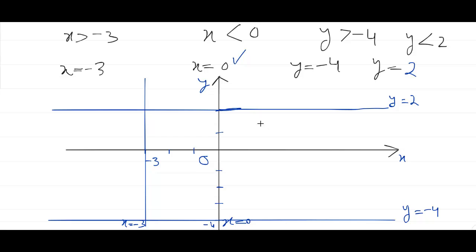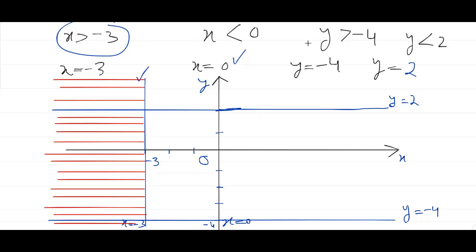Now let's shade the unwanted region. Take the first inequality: x is greater than minus 3, where this line is x equals minus 3. The required region is on the right-hand side, but we will shade the unwanted region, which is on the left-hand side. So this is our unwanted region shaded.